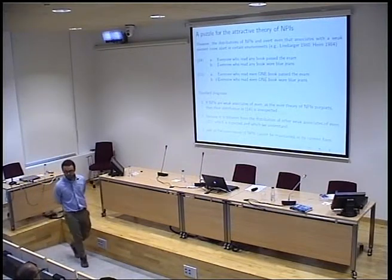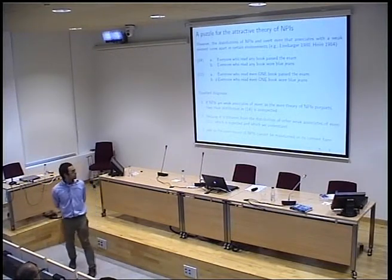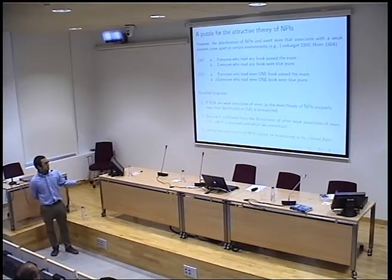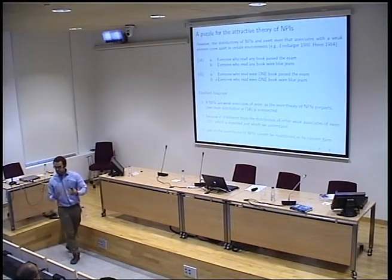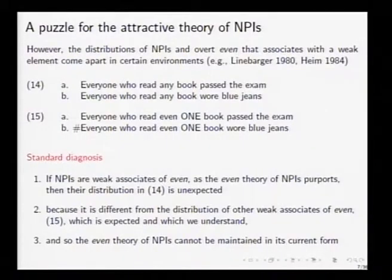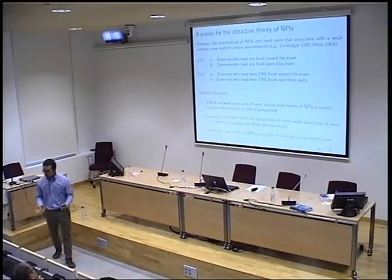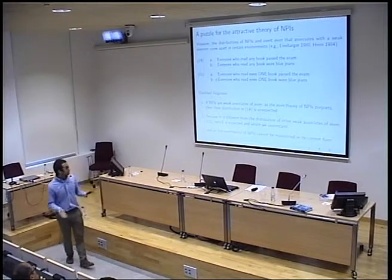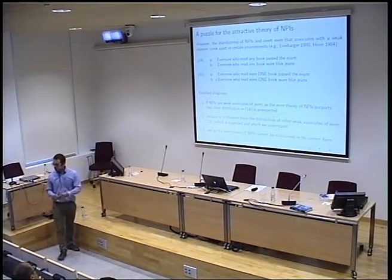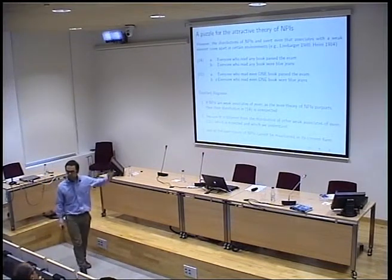Given this data, the standard diagnosis is: if NPIs are weak associates of 'even' as the even theory purports, then their distribution is unexpected — because it's different from the distribution of 'even one' type expressions in sentence 15. The distribution of 'even one' expressions is expected and we understand it. And so the even theory of NPIs cannot be maintained in its simplest form.